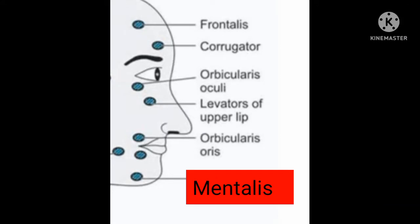Hello everyone. In this video we will be seeing about facial nerve motor point stimulation. Patient position is supine. Anode is placed over the cervical region. Therapist stands in a position such that they are able to reach the machine. Cathode is placed over the muscle that you want to stimulate.